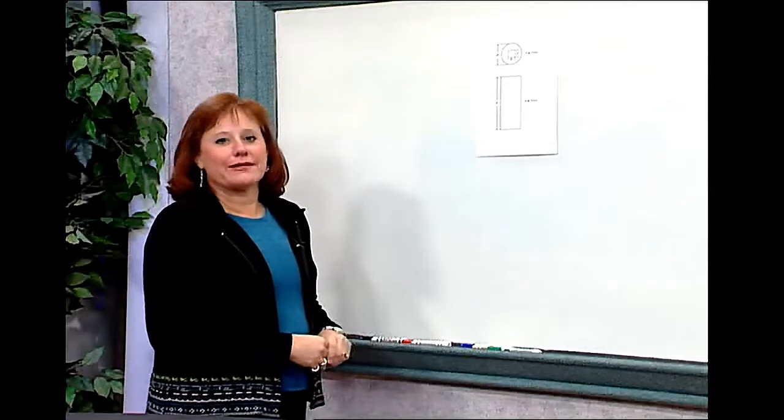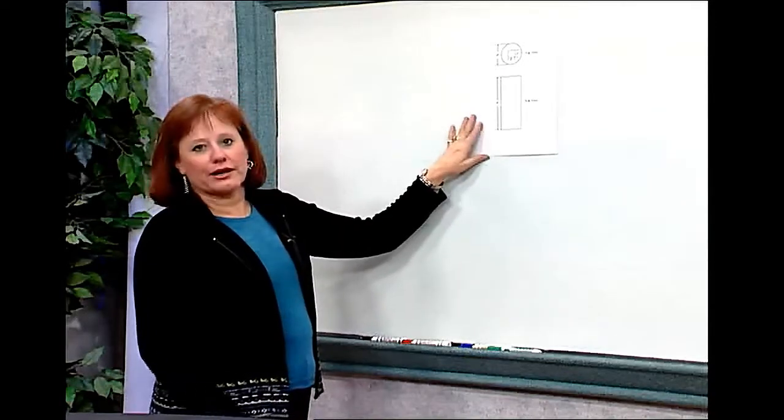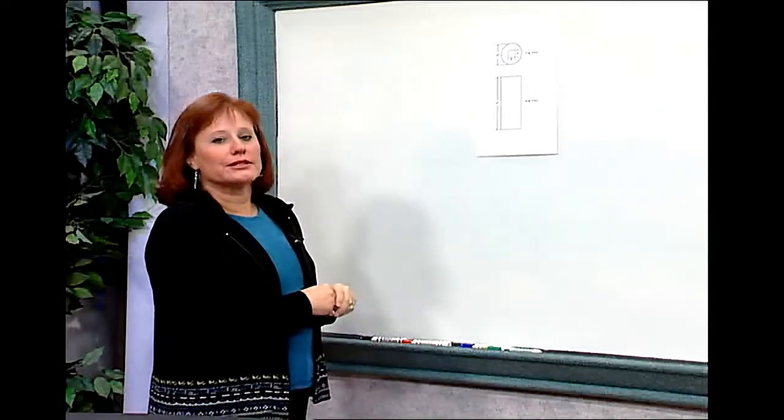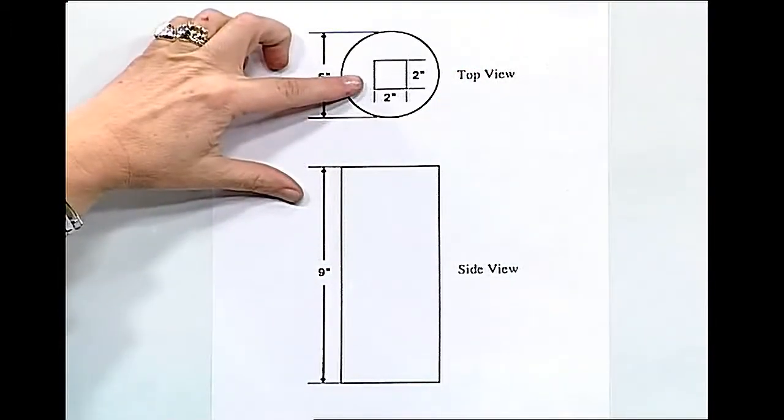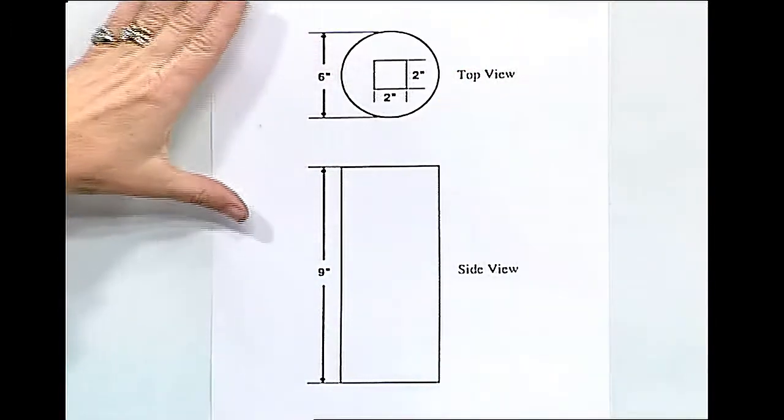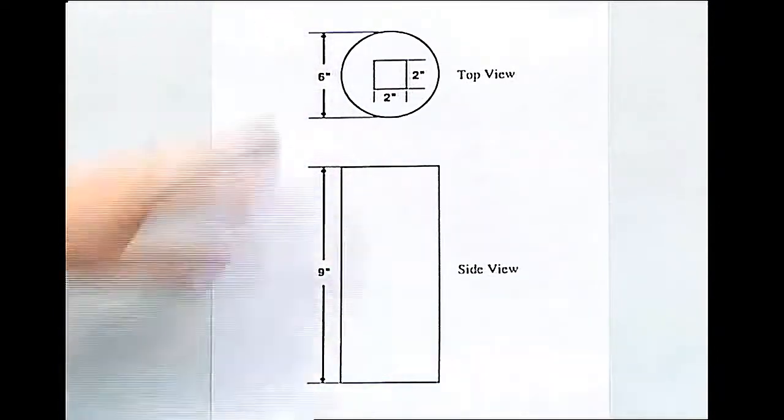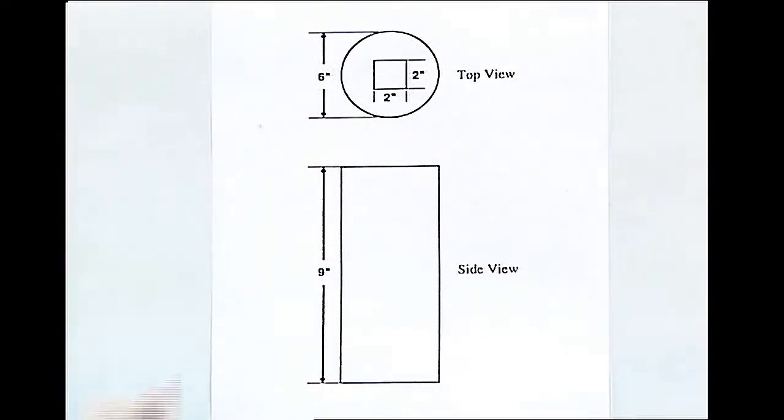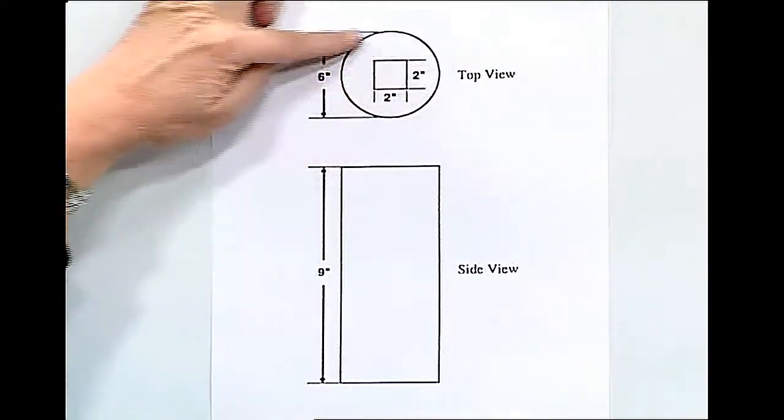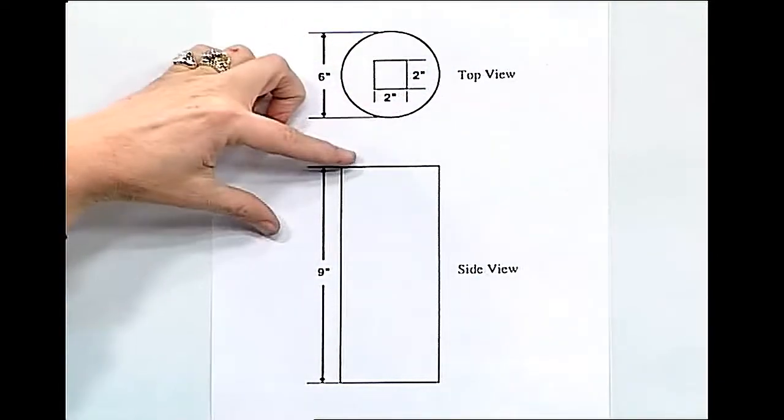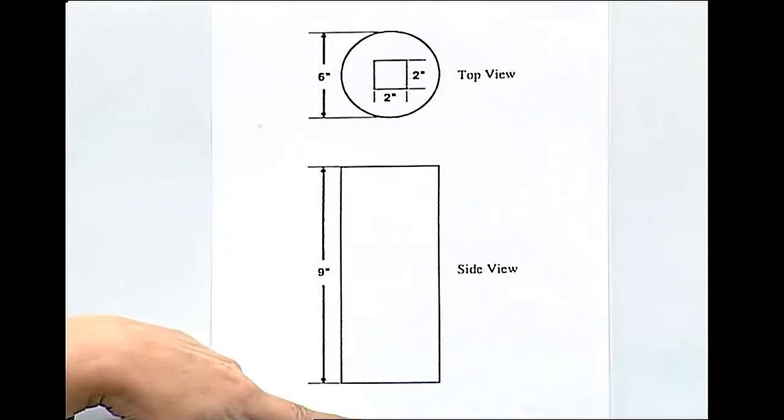Another example of a multi-step volume problem is illustrated right here. Imagine that this is a piece of extruded plastic that's been pulled into a cylinder shape with a square hole in the center. I want to know exactly how much plastic has been used to make this particular shape. The outside of the shape is cylindrical. I can tell from the top view it's got a round base. So I have a cylinder with a round base on the top and on the bottom.